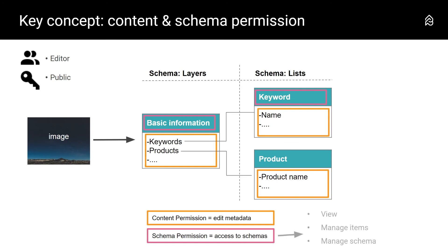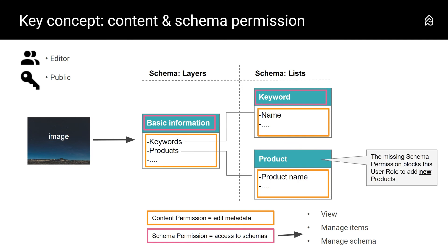For schema permissions, you have the choice between: 'view,' which is set by default for all; 'manage all items,' allowing a user role with edit metadata content permissions to edit; and 'manage schema,' allowing administrators to manage the schema settings like adding fields. Staying with this example: if we give our editor schema permissions on the layer 'basic information' and the list 'keywords,' she can select from the available list keywords and products, and she can create a new keyword — but she cannot add a new product, because she does not have the schema permission on the list 'product.'